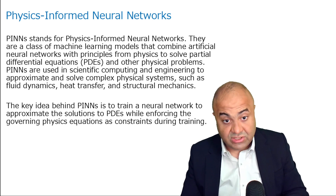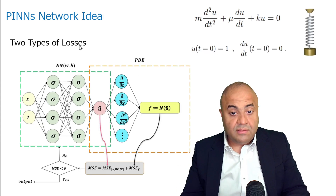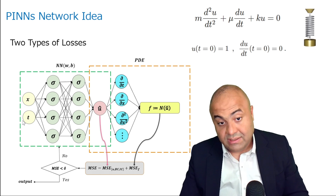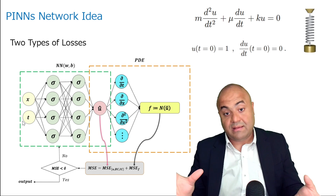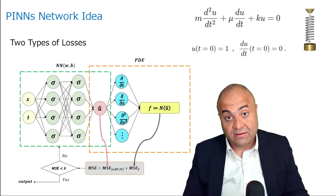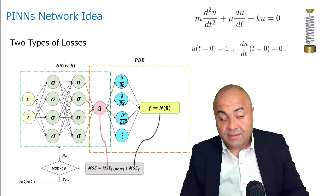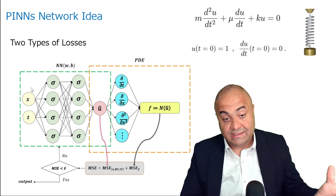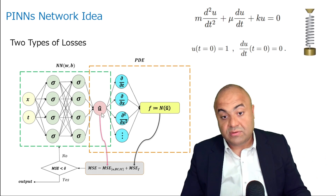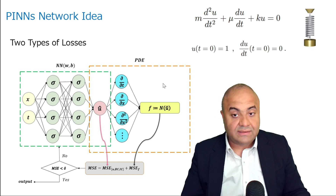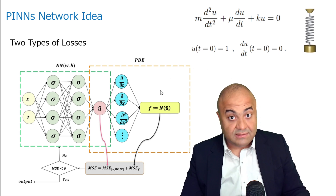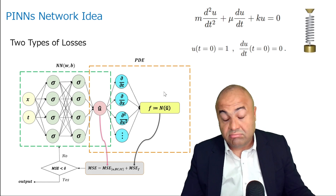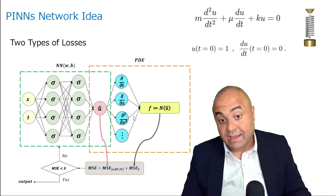The way we do it is by having a network. The network will have an input — in an ODE we have time, and the output is basically the location of the mass. But inputs can be other things like x and t, x, y and t, or x, y and z for 3D problems. The output can also be anything — like pressure, temperature, or velocity.